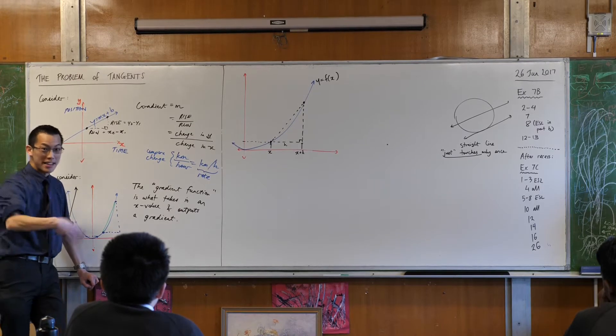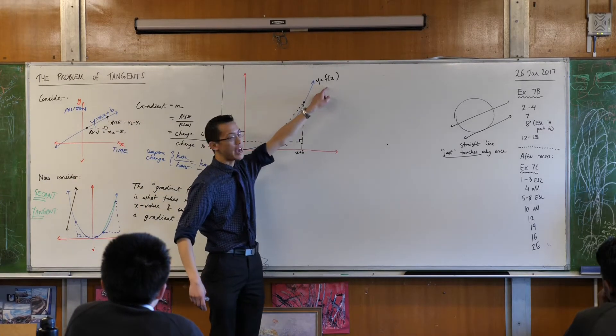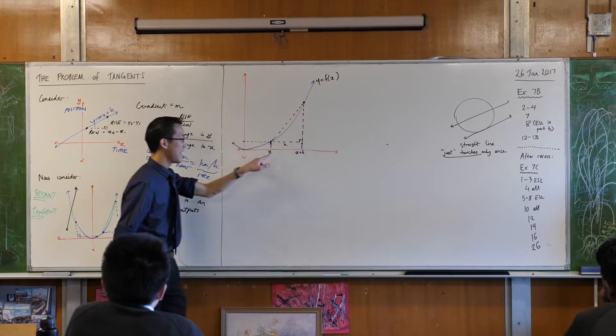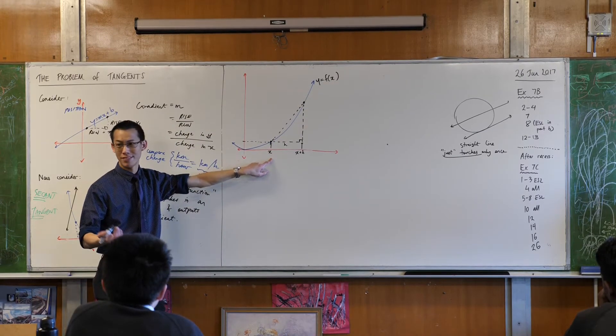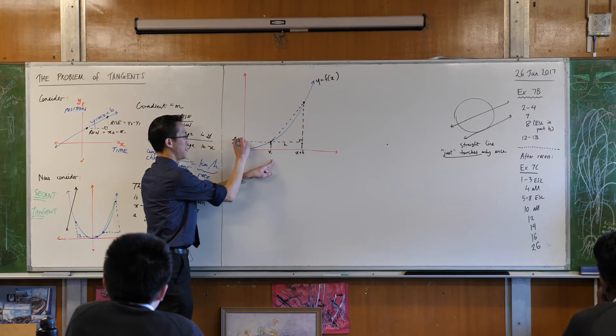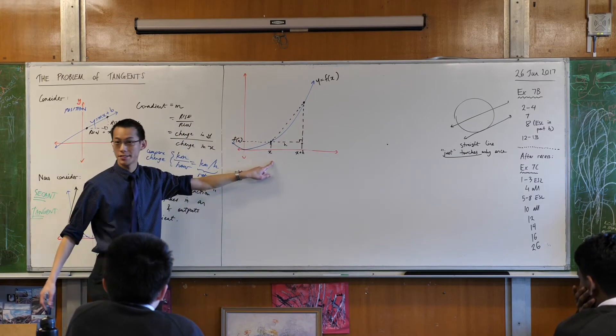The y coordinate, by definition, will be f of x, right? And if at this point my x coordinate is called x, then f of x will be the y coordinate.